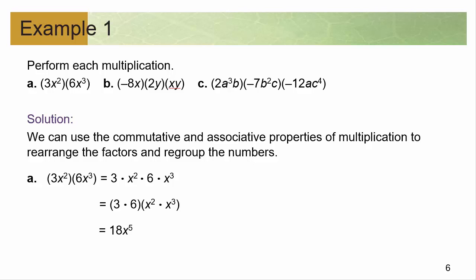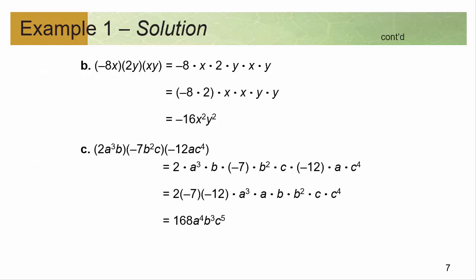The x pieces get multiplied together. When you multiply powers you just add the exponents, because that's just 2 x's times 3 more x's, and when you put it all together there are 5 of them. That's where you get x to the 5th.